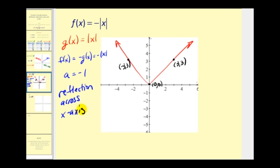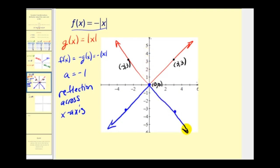So instead of opening up, the given function will open down. We can just change the sign of these y-coordinates, so we'd have the point (-3, -3), still the origin (0, 0), and then (3, -3). This would be the graph of f of x equals negative absolute value of x. The original is in red, and the transformed or reflected graph is in blue.